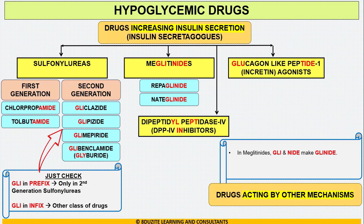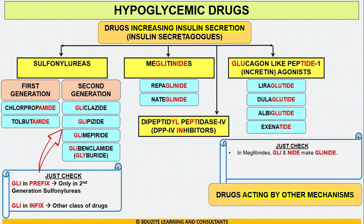Moving to glucagon-like peptide-1 agonist or incretin agonist, we have liraglutide, dulaglutide, albiglutide, and exenatide. If you observe the red letter words, G-L-U and T-I-D-E — combined, it becomes glutide. So all these drugs are glutides. Also, the letters G-L-U appear as an infix in the middle of the words.